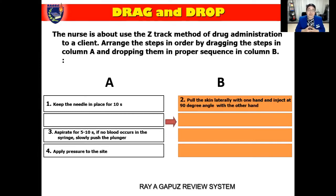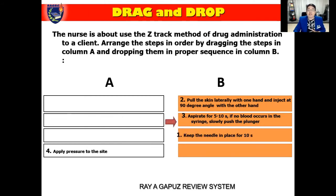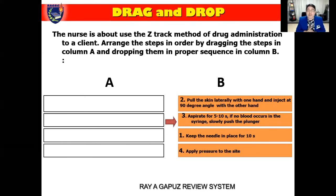Why do you have to pull the skin laterally? It creates a zigzag direction underneath the skin, and eventually the skin serves to lock out the puncture site, thereby preventing staining of the skin. After that, the next step would be to aspirate for 5 to 10 seconds. If no blood occurs in the syringe, slowly push the plunger. When you aspirate for blood, you'll have to wait — it's not as if you aspirated for 1 to 2 seconds and that's it. Aspirate for 5 to 10 seconds; if no blood occurs in the syringe, slowly push the plunger, and you have to administer the drug slowly. You need to keep the needle in place for 10 seconds, and then apply pressure to the site after. The most important thing to remember is that you do not massage the site after a Z-Track method of drug administration.